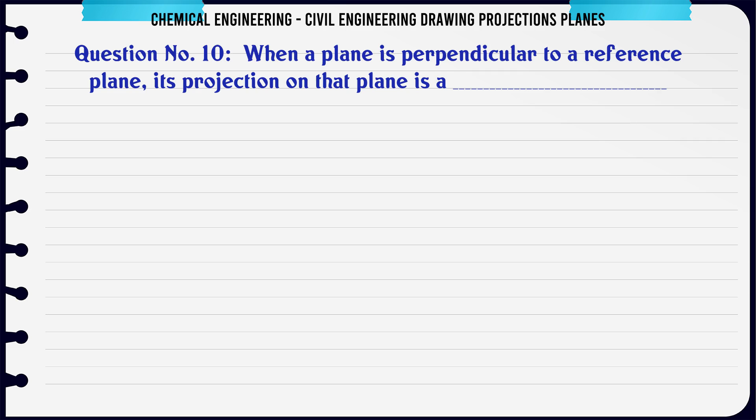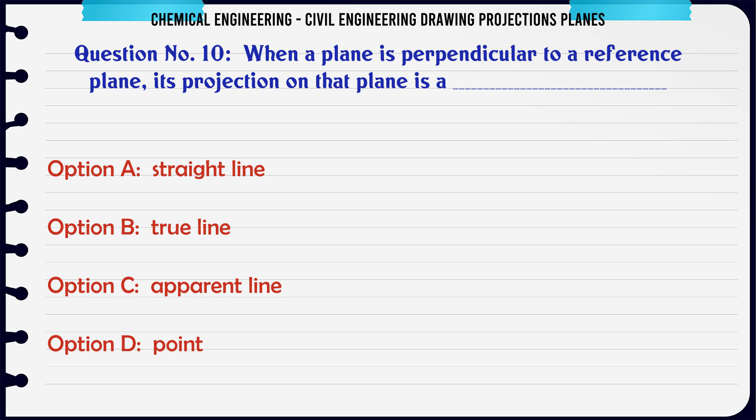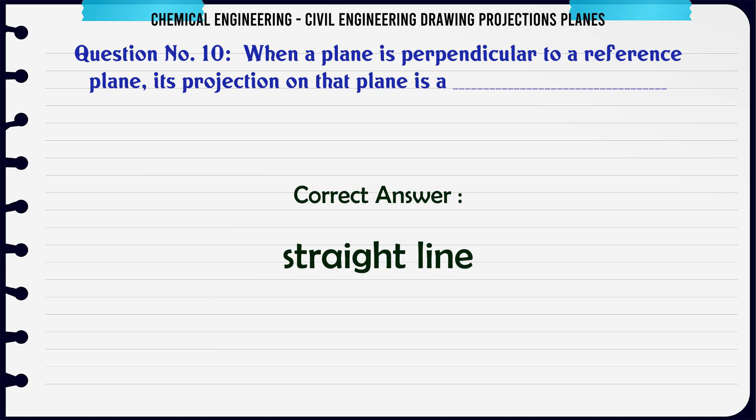When a plane is perpendicular to a reference plane, its projection on that plane is: A. Straight line, B. True line, C. Apparent line, D. Point. The correct answer is Straight line.